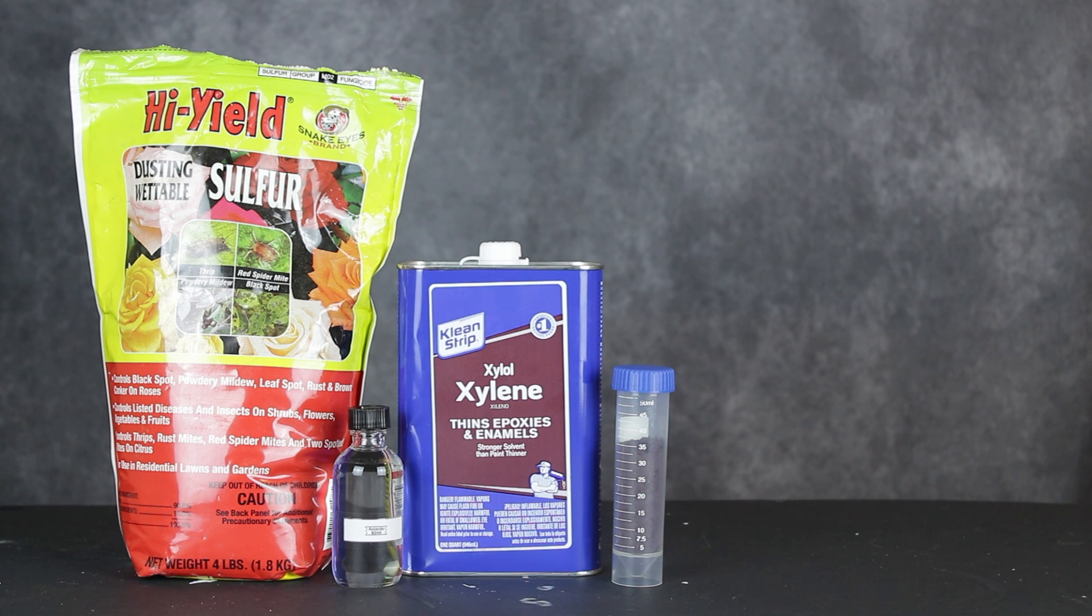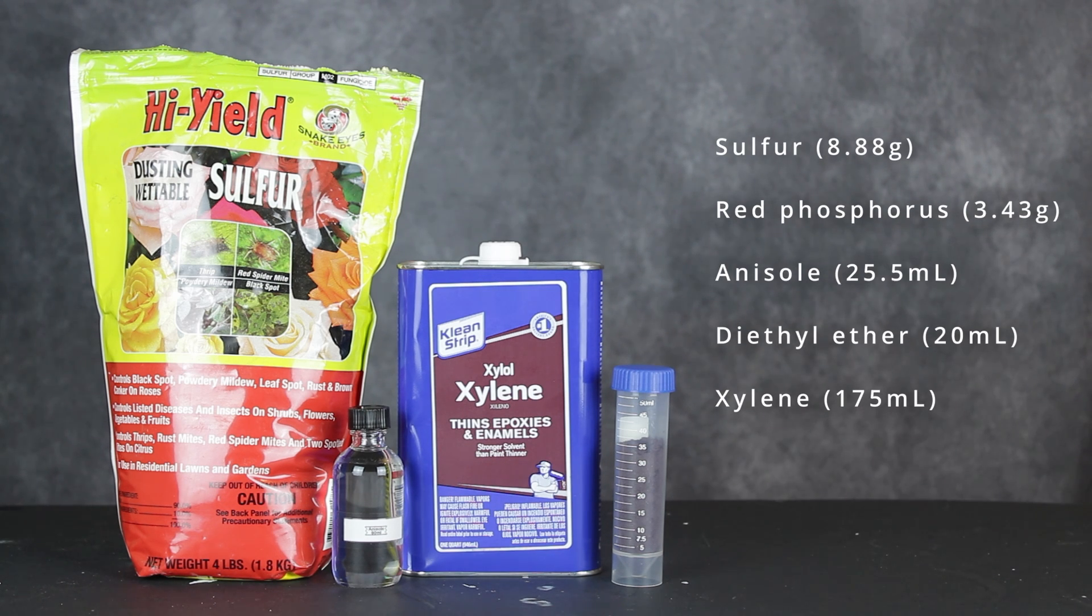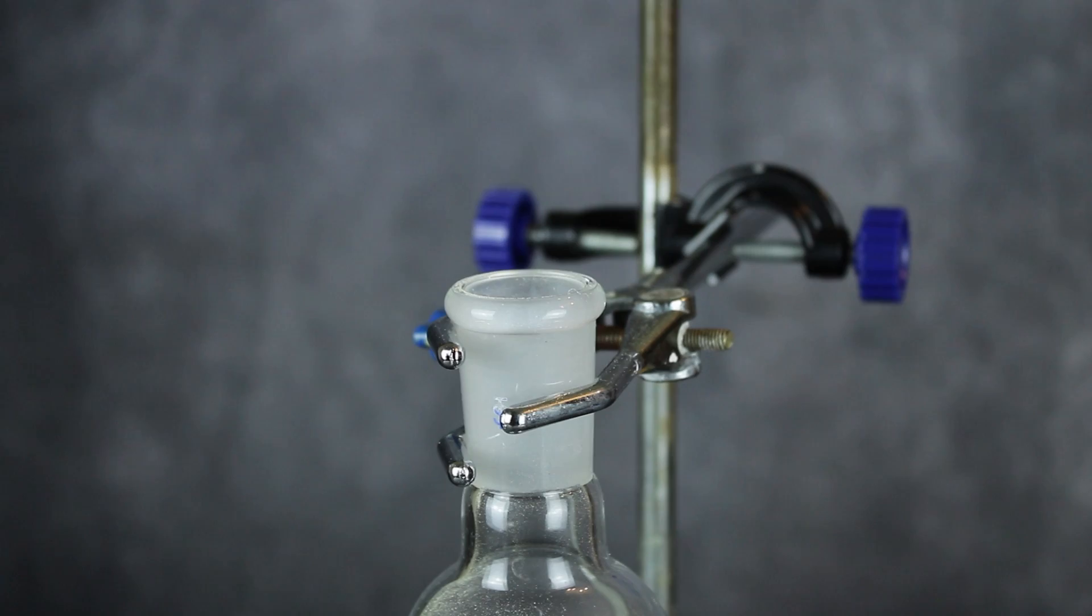To get started, I obtained the following reagents: sulfur, red phosphorus, anisole, diethyl ether, and xylene. Our first task in this endeavor is to synthesize phosphorus pentasulfide, and for that, we'll only need the first two ingredients.